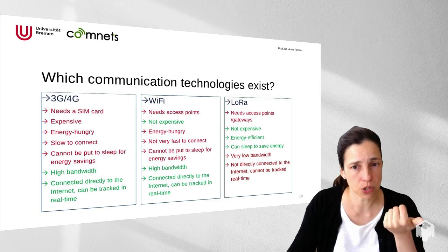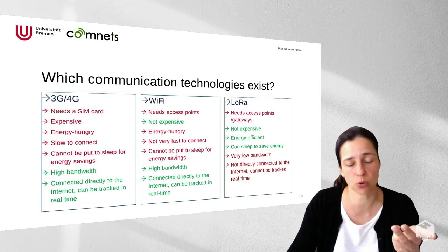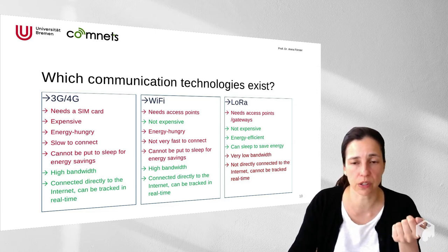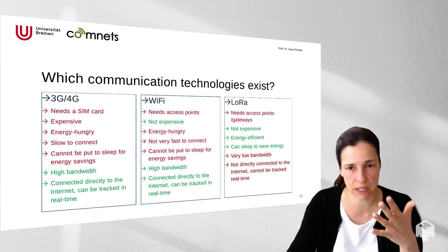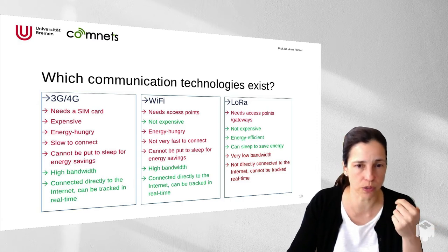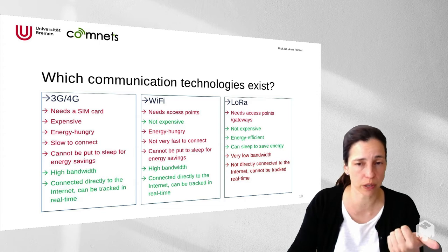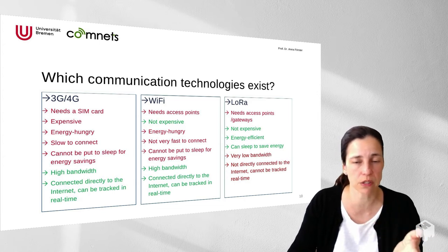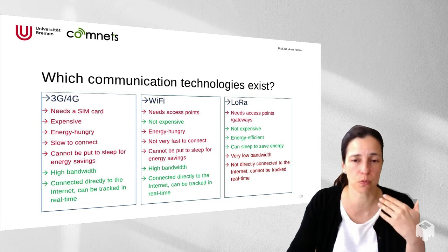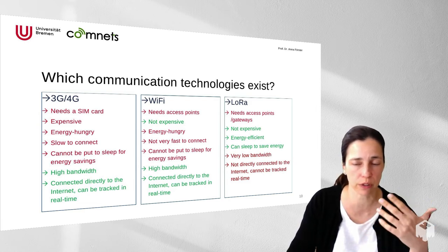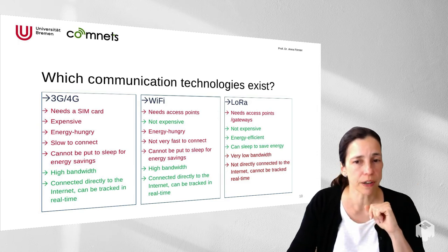However, 3G/4G has very high bandwidth, so if you have lots of data — such as acceleration data, image data, or audio — it's a very interesting solution. Being connected directly to the Internet also means you can track devices in real time; for example, if you put such a device on a truck you can know its location from anywhere. Sensor data is also available almost in real time, so you can see whether food is being transported safely. Now let's move to Wi-Fi, our second option.